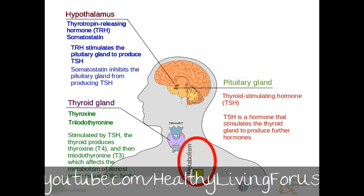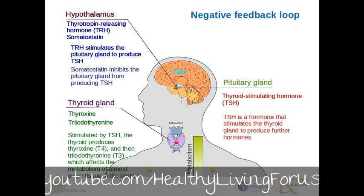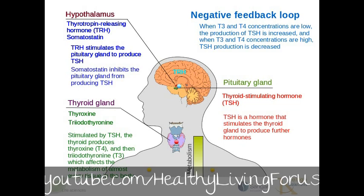Let's make a little animation to illustrate this. Take note of our little bar graph down here at the bottom, indicating the rate of metabolism in an imagined tissue — the higher the bar, the higher the metabolism. The hypothalamus releases TRH, which acts on the pituitary gland, causing the production of TSH, which in turn stimulates the thyroid to produce T4 and T3. This affects the metabolism of almost every tissue in the body, and as you can see, our little graph has increased. We must also note that there is a negative feedback loop here: when T3 and T4 concentrations are low, the production of TSH is increased, and when T3 and T4 concentrations are high, TSH production is decreased.